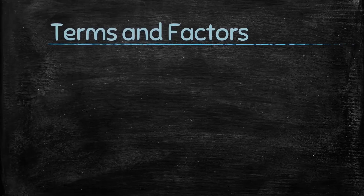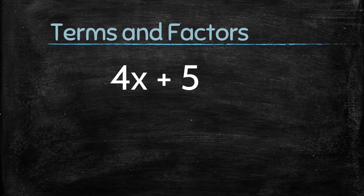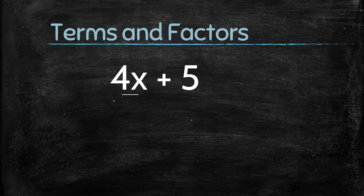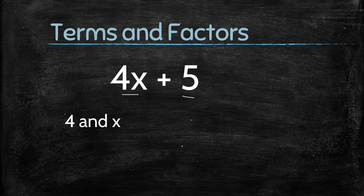First, let's understand terms and factors. Terms are added to form expressions. Consider the expression 4x plus 5. This expression is made up of two terms: 4x and 5. Terms themselves can be formed as the product of factors. The first term 4x has two factors — 4 and x — while the second term 5 is made up of just one factor, that is 5.